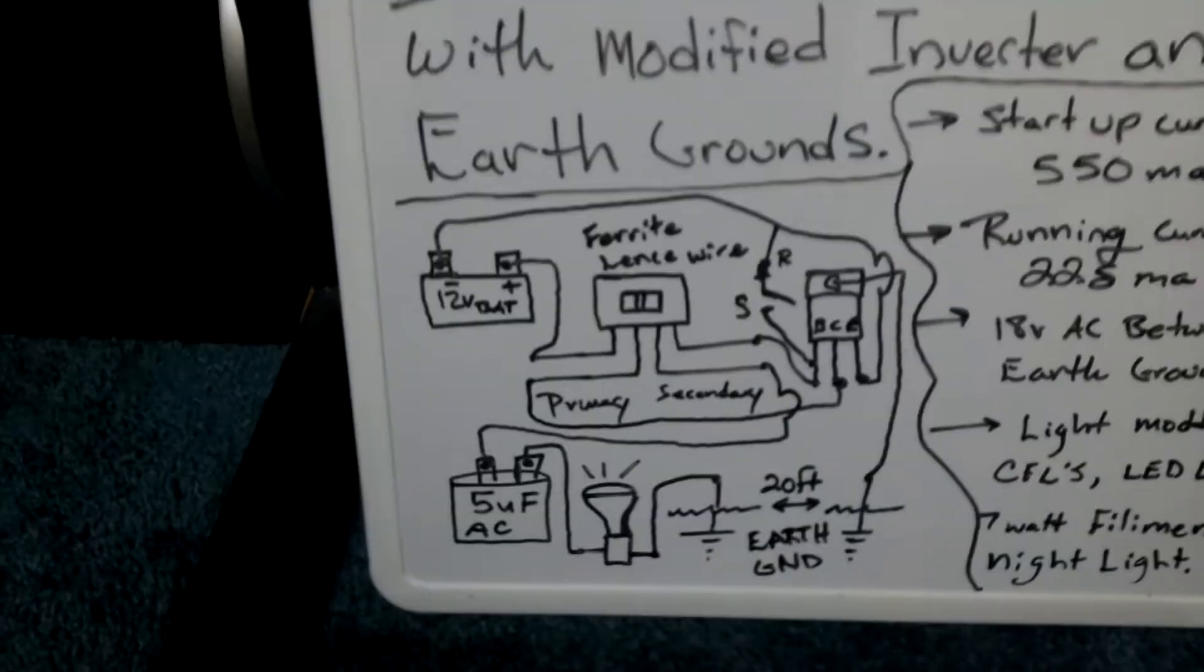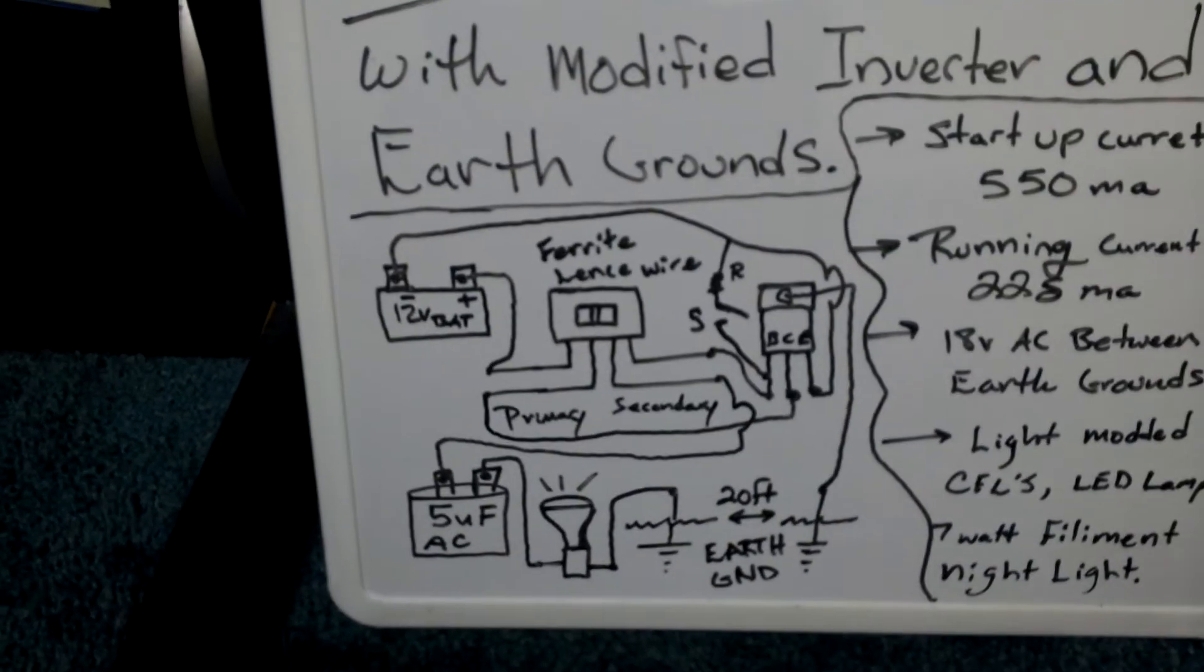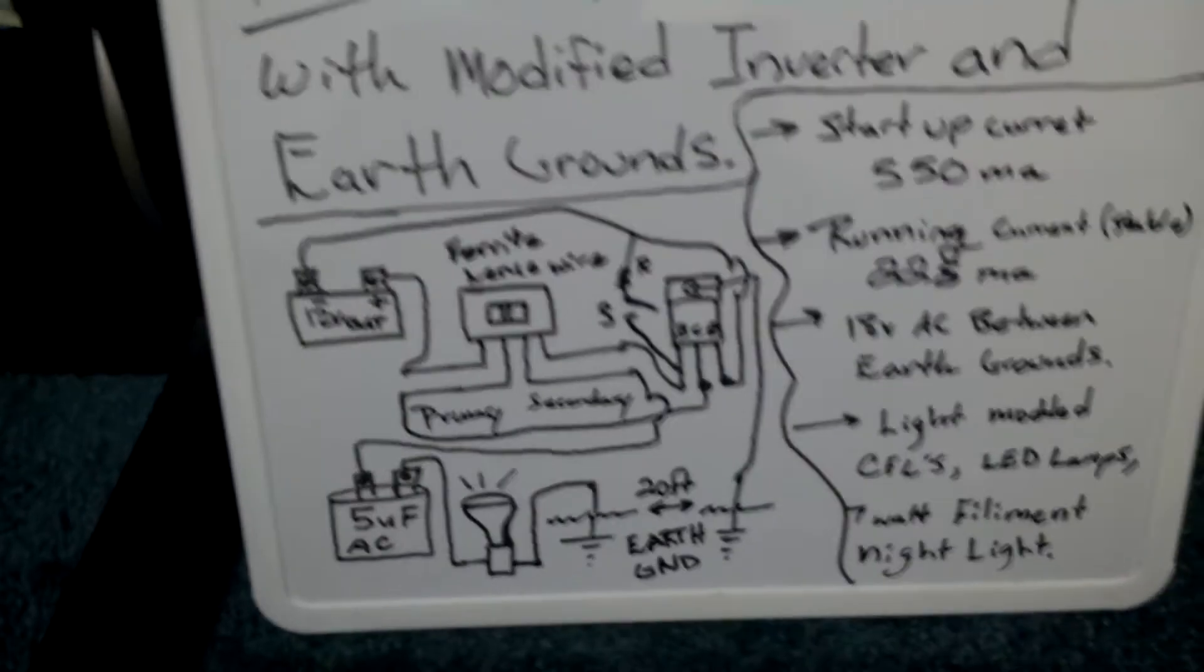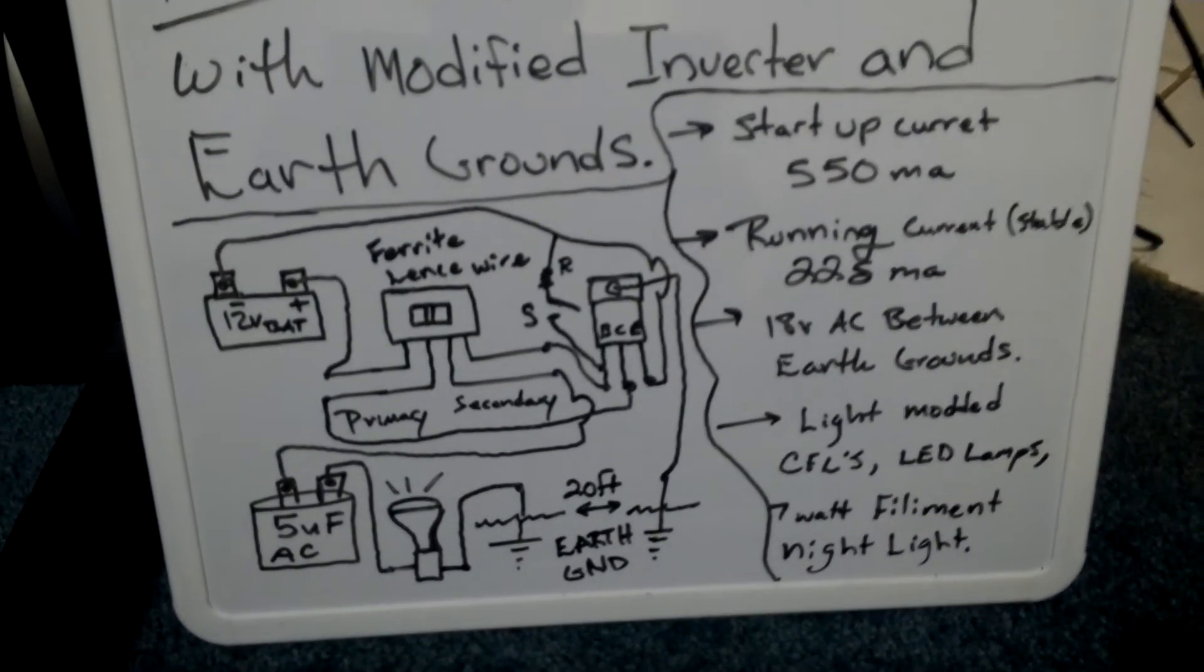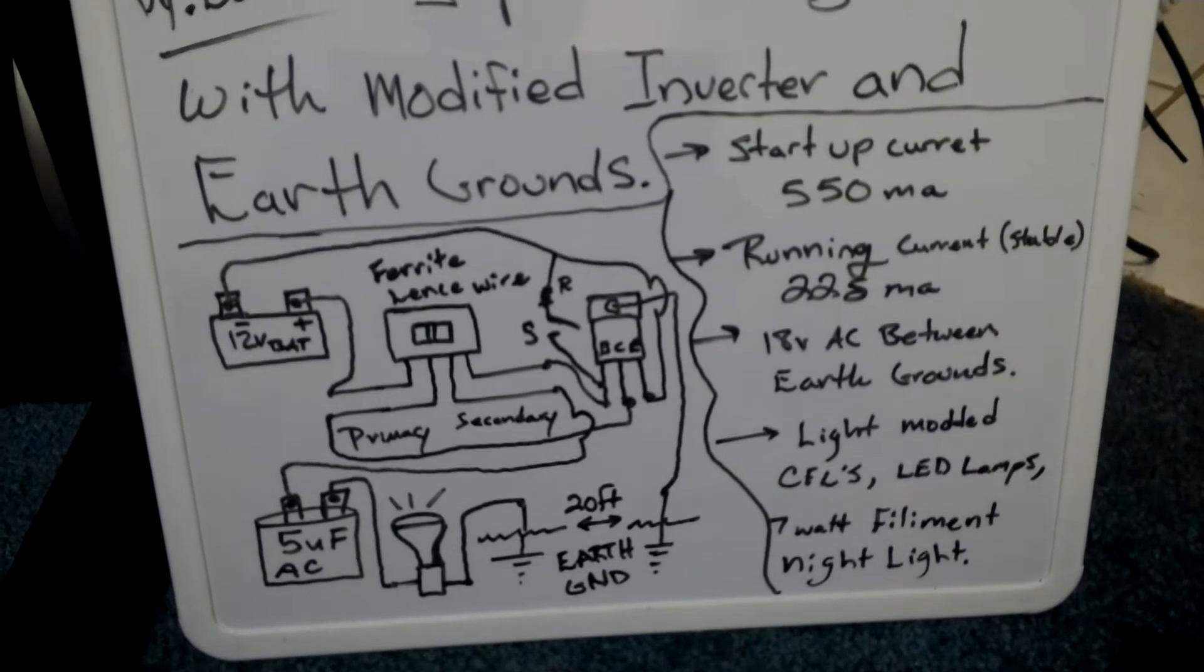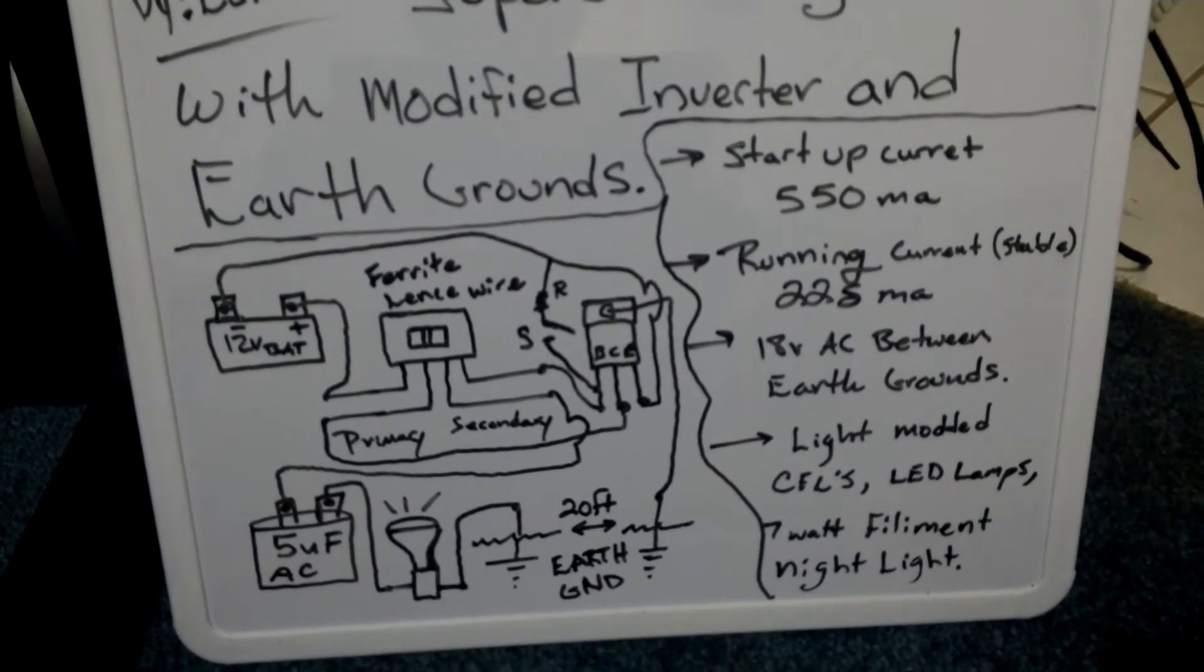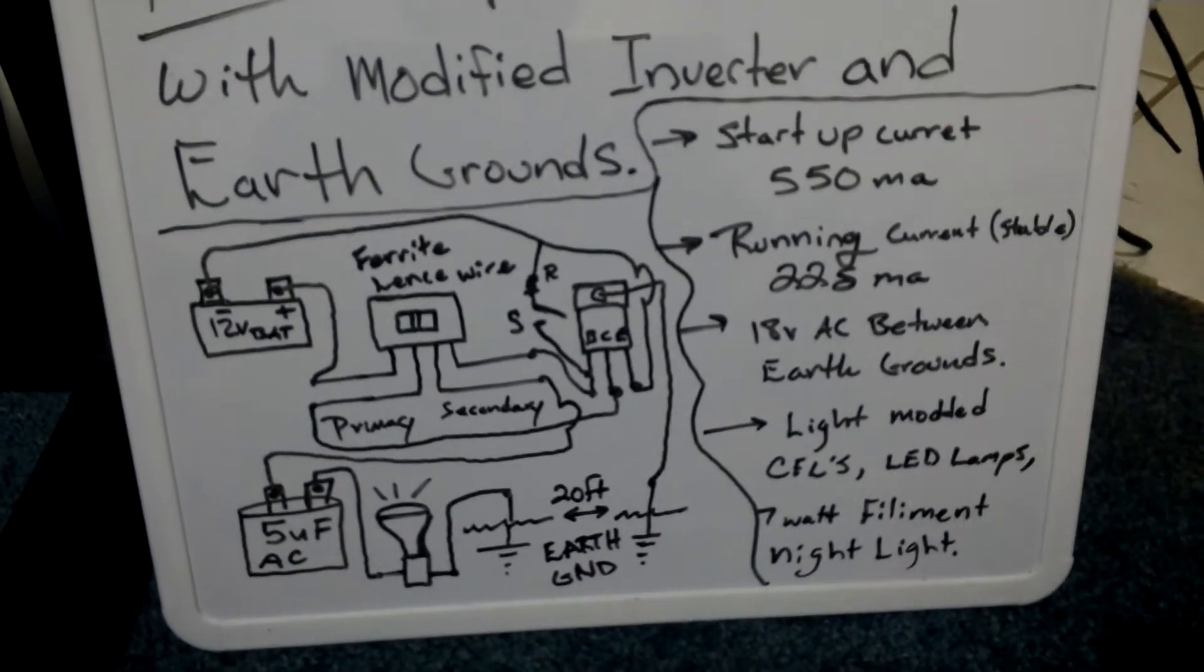This setup right here, you got the 12 volt battery, the ferrite core with the lens wire, the transistor, which can be pretty much any of them out there. The ones that connect up to a case or a piece of metal for a heat sink are the best ones I've seen.